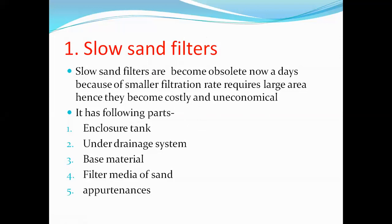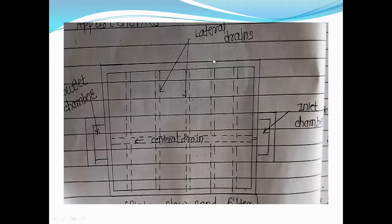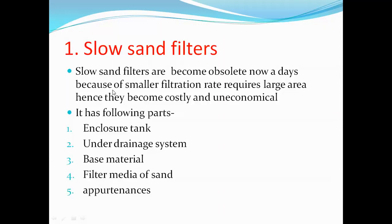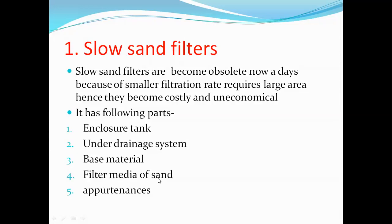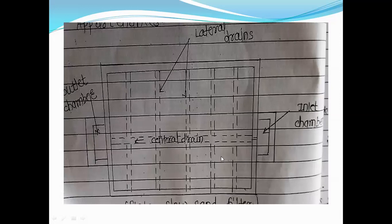The slow sand filter has five parts. First is the enclosure tank — that is the tank of the slow sand filter. Second is the under drainage system — these are the drains provided in the slow sand filter for water flow. Third is the base material used in the slow sand filter. Fourth is the filter media of sand. Fifth is the appurtenances — the various fittings required for the installation of the slow sand filter.